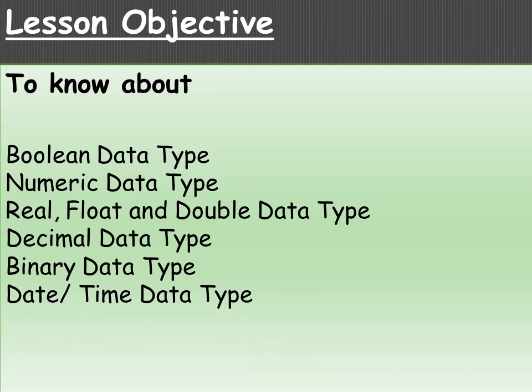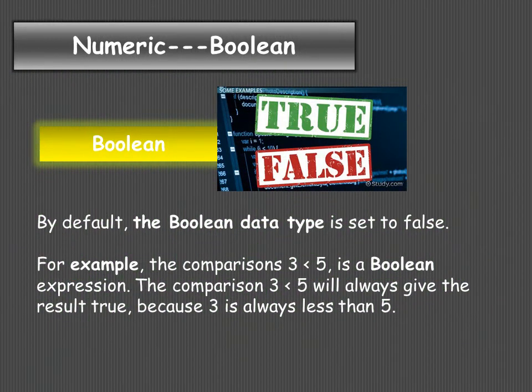Under numeric, the first data type we have is boolean. Boolean data type is a data type that has one of two possible values, which can be denoted either by yes or no, on or off — one for on and zero for off — or true or false. The default value for the boolean data type is false.